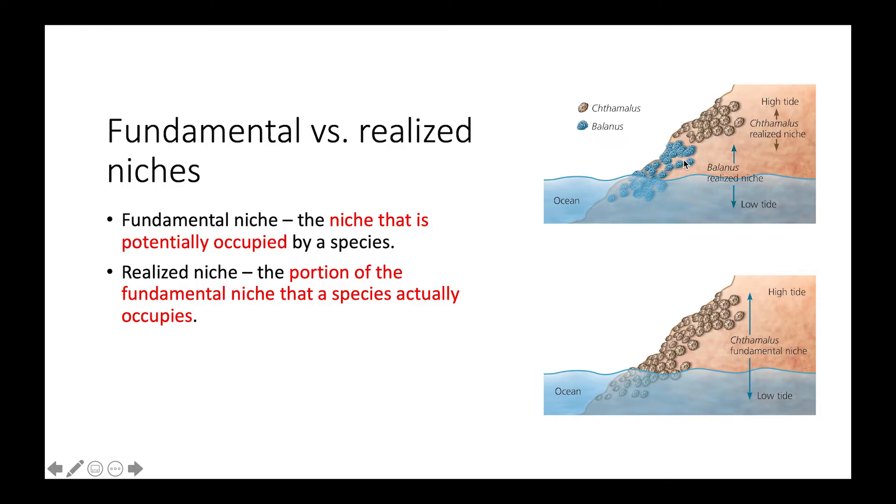What the experimenters in this case wanted to find out is if the interspecific interactions between these two organisms was limiting their distribution and where they could be found. So what they did is they removed the Balanus.